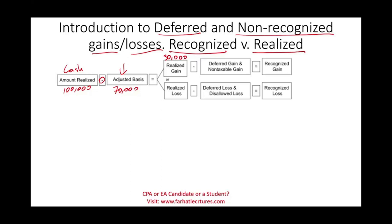That gain is realized — that's what actually happened. We sold something for $100,000 with an adjusted basis of $70,000. Now, that $30,000 may not be taxable, for many reasons — that's what the whole lecture is about. The whole gain or some of the gain might be deferred. Deferred means push it down into the future — kick the can down the road — don't recognize the gain now; we're going to recognize it later.